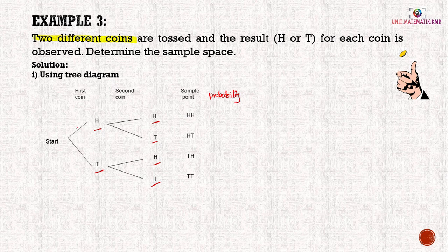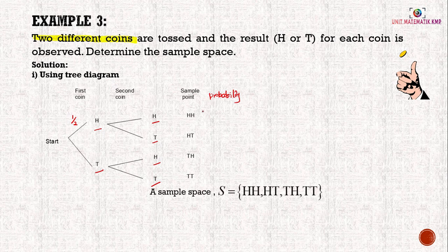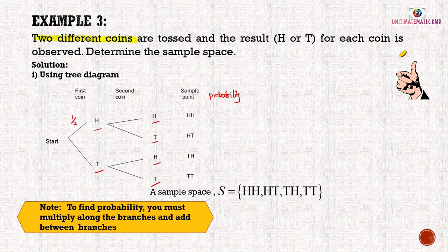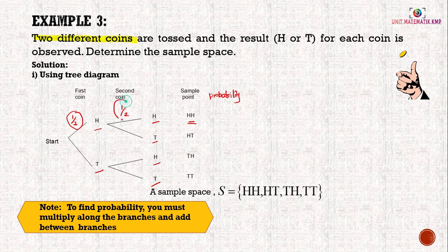We write the probability along the branch — for example, 1/2 written in the middle of each branch. The sample space we get when tossing 2 different coins is: {HH, HT, TH, TT}. Note: to find the probability, you multiply along the branch and add between branches. For example, to get HH, we multiply 1/2 × 1/2 = 1/4. We will learn more about this later.